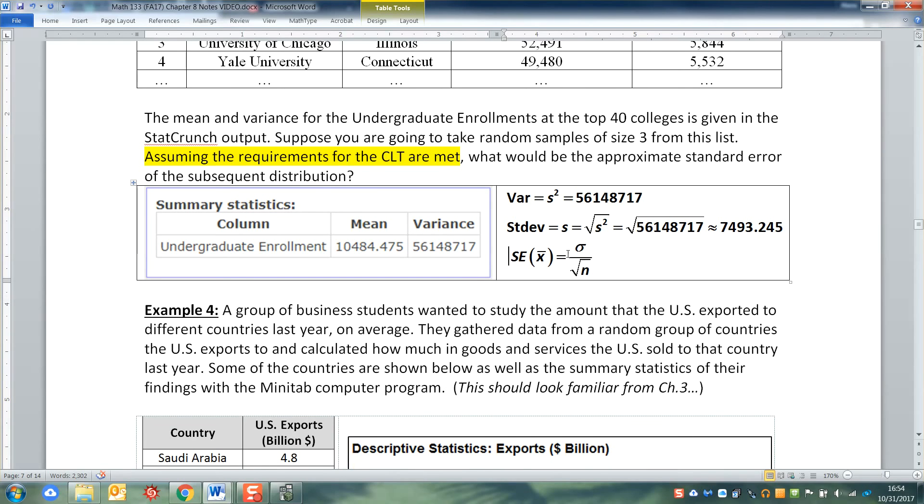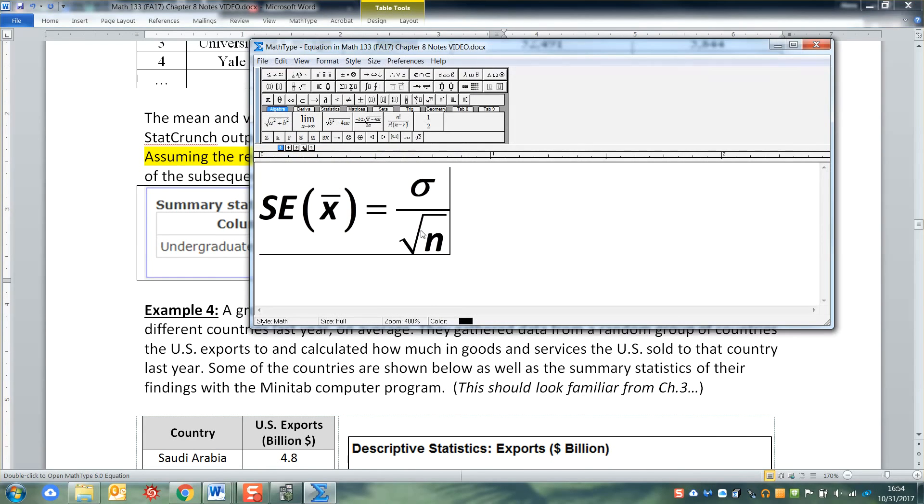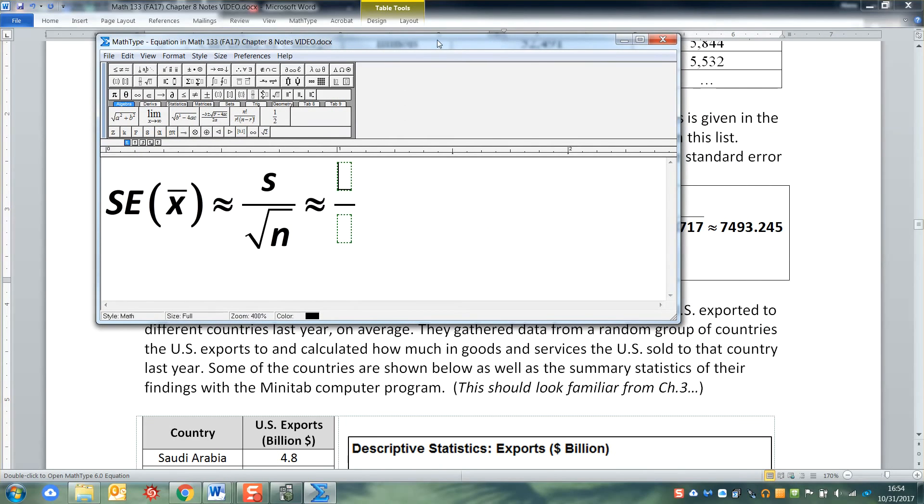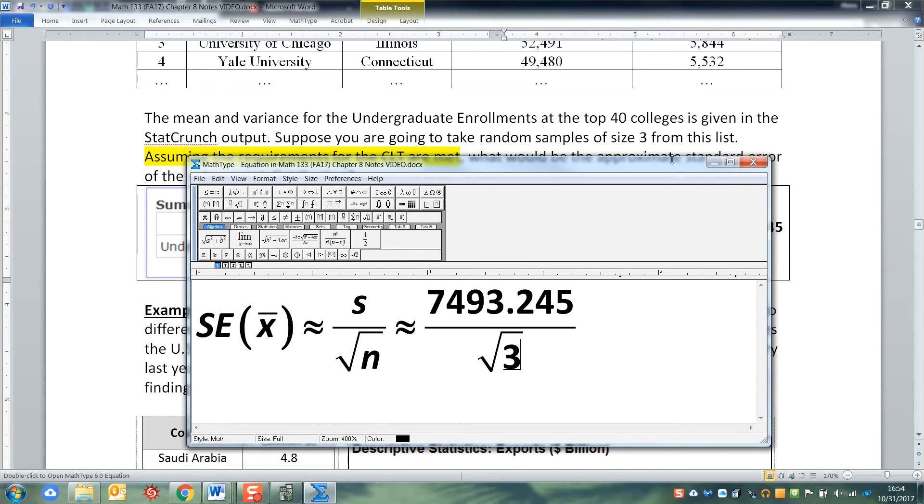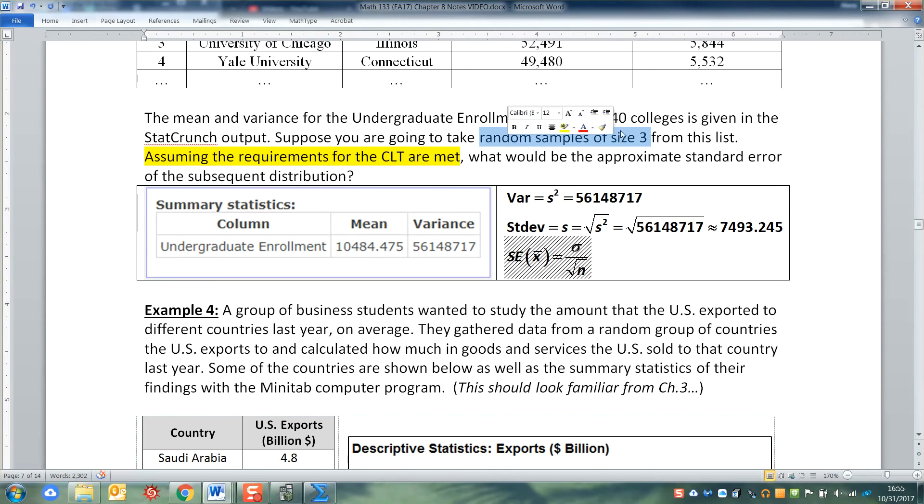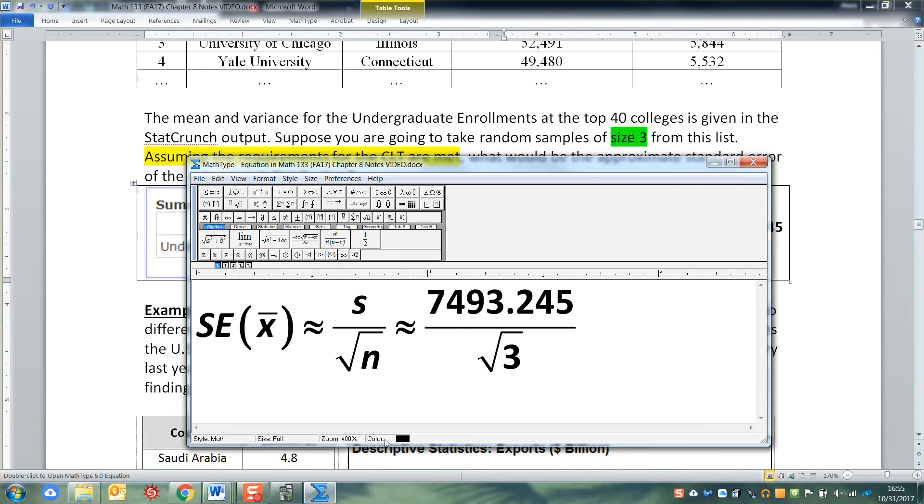Now, how does that help me? Well, standard error, remember, is technically σ over the square root of n, but when σ is not available, we'll approximate it with s over the square root of n. So that means that it's approximately that number we just found, 7493.245, divided by the square root of the sample size, which I'm talking about a sample size of 3. It says right here, use random samples of size 3 right there. So that's my sample size that I'm going to work with, which means I'm going to take that number that we found with the calculator, and I'm going to divide it by the square root of 3.